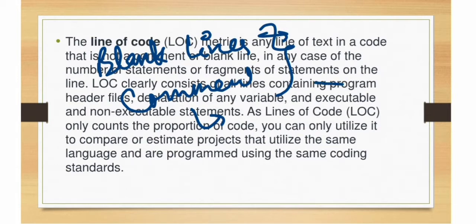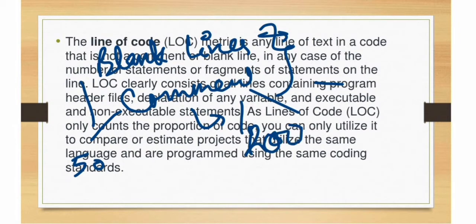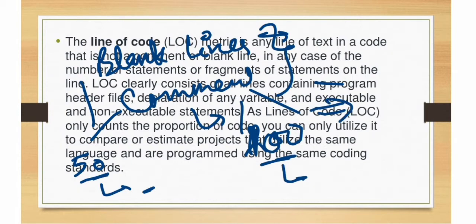A developer can inflate blank lines and comments. If we count them, what happens? Without blank lines and comments, we have 50 lines of code, for example. But with blank lines and comments added, it could become 100 or 200. If we estimate cost and effort on 50 lines it is different from estimating on 100 lines. The two reasons we don't count blank lines are: no contribution to functionality, and developers can misuse them.